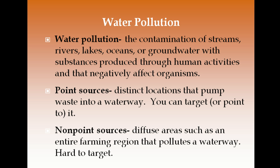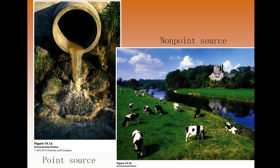The problem with non-point sources is that because they're hard to target, it's hard for the EPA to say who's responsible. A helpful hint: point sources are singular — on a multiple choice question, if you see one that is singular, it's more than likely a point source. If it's plural — like animal lagoons or farming areas — those are more likely non-point sources. A particular pipe releasing pollutants into a body of water is a point source; a large farming area where it's hard to pinpoint the source is a non-point source.